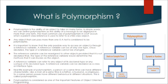Real-life example of polymorphism: a person at the same time can have different characteristics. Like a man at the same time is a father, a husband, an employee. So the same person possesses different behavior in different situations. This is called polymorphism.